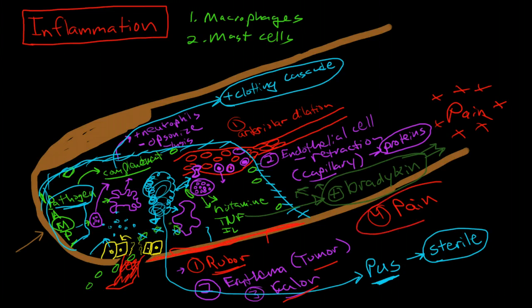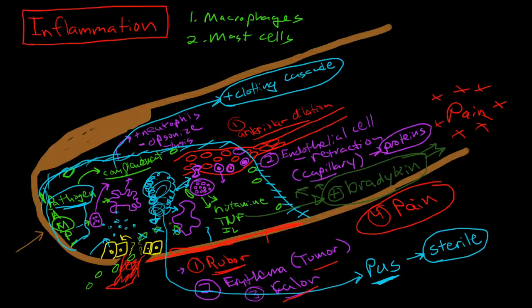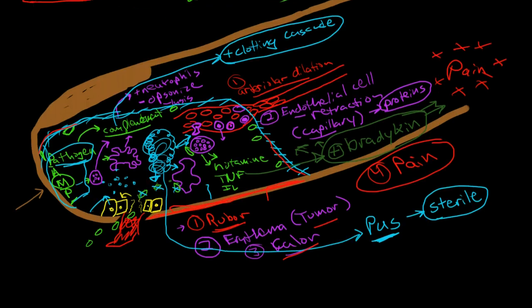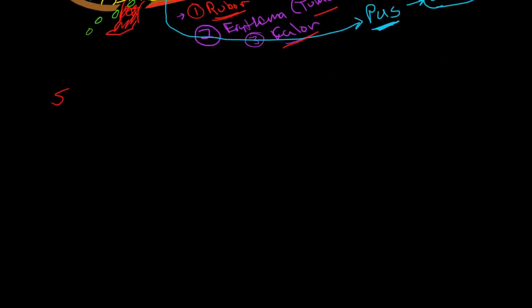So we have the four cardinal signs: rubor (redness), tumor (swelling), calor (heat), and the fourth manifestation, pain (dolor). You can see how these are all caused by these interrelated processes. Locally this process is very effective because arteriolar dilation allows neutrophils to get to the area, endothelial cell changes increase the interstices allowing proteins, neutrophils, and other cells to migrate to the area, and the clotting cascade walls off the area very protectively.